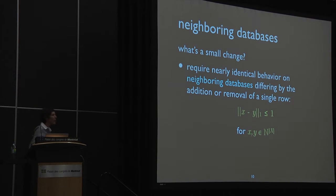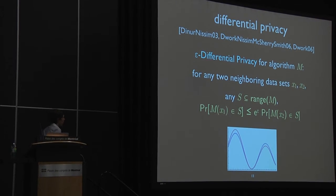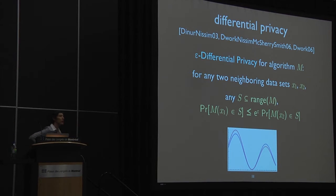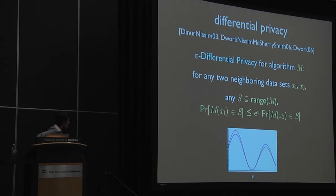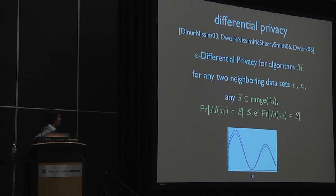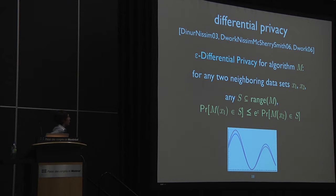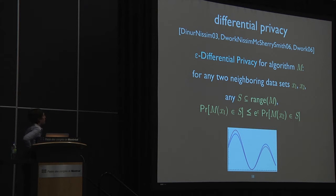Now we can get to differential privacy. Epsilon-parameterized differential privacy for an algorithm — a mapping from database space to an outcome space — says that for any two neighboring datasets and any subset of the outcome space, the probability that the algorithm maps the first database into that subset is multiplicatively very close to the probability it maps the second database into that subset. Let's spend some time with this definition, because we'll be using it throughout the talk.